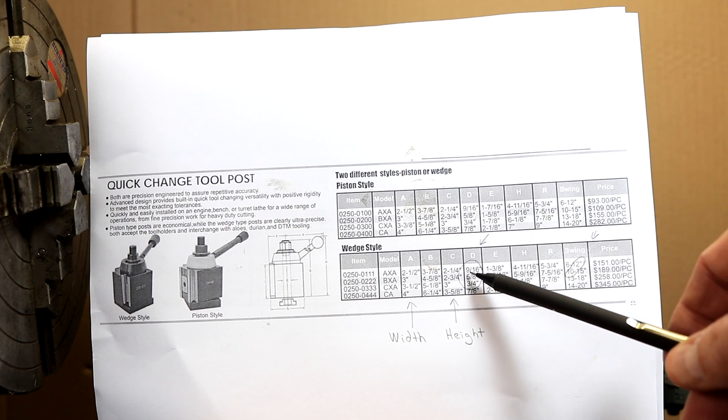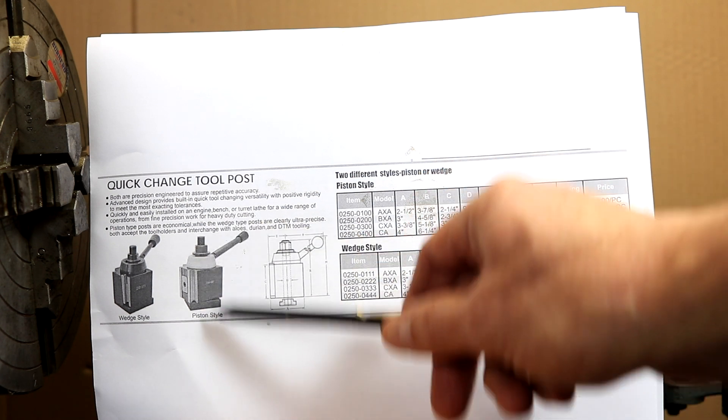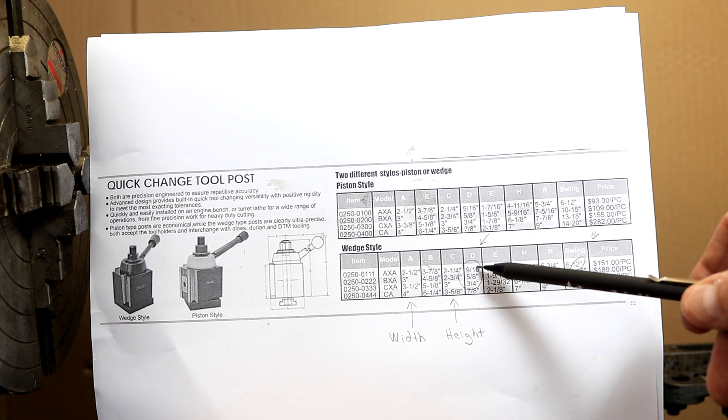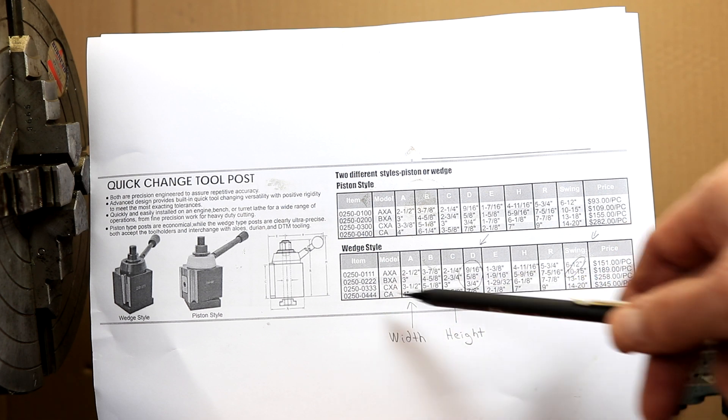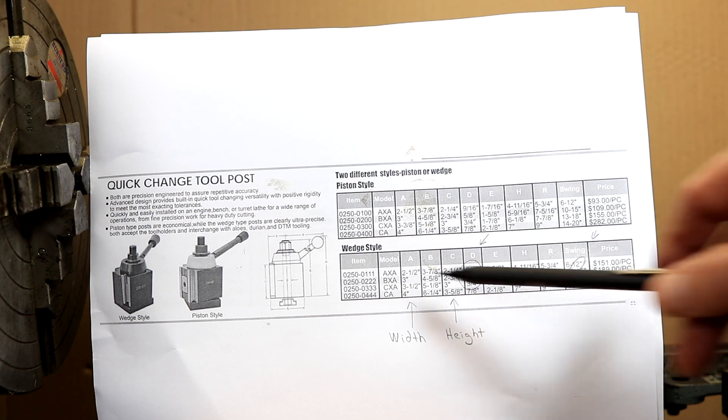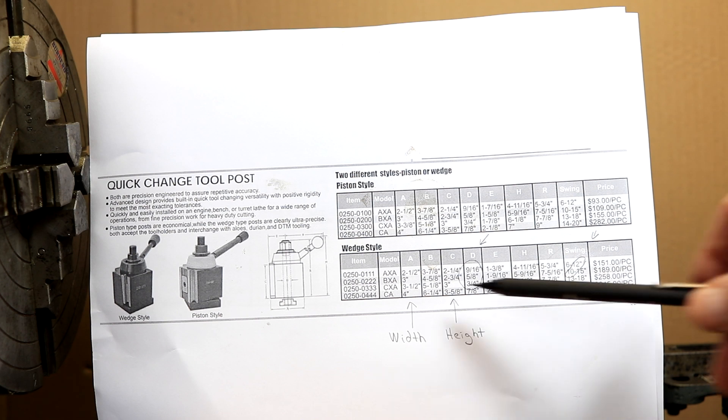The diameter of the through rod that holds it onto your compound is 9/16ths for an AXA, 5/8ths for a BXA, and 3/4 for a CXA. So that might be a consideration for your lathe depending on the size of the throat in your compound rest. And it clearly indicates here that the AXA goes from 6 to 12, BXA 10 to 15, and CXA from 13 to 18.